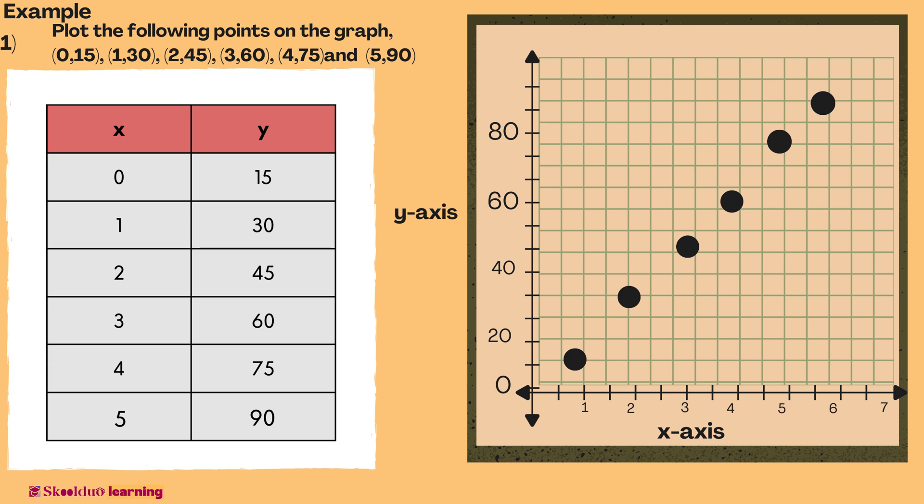Example number 1. Plot the following points on the graph: 0 and 15, 1 and 30, 2 and 45, 3 and 60, 4 and 75, and 5 and 90.